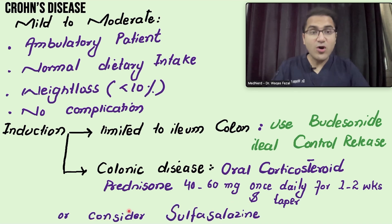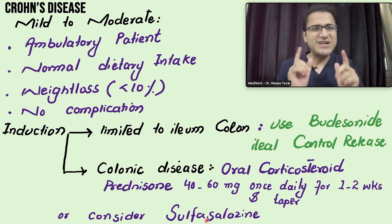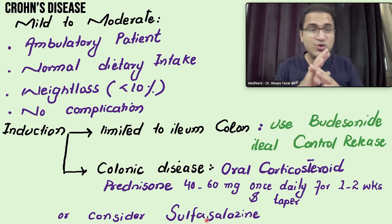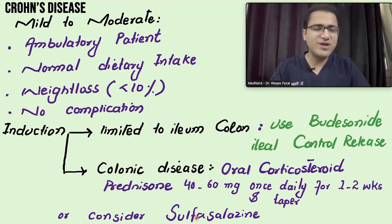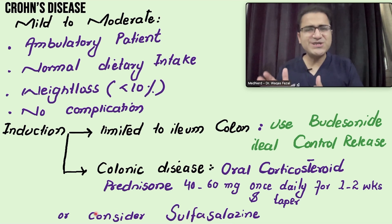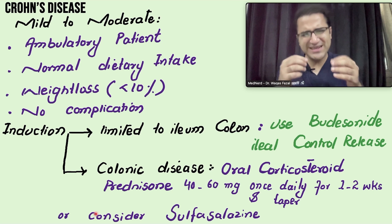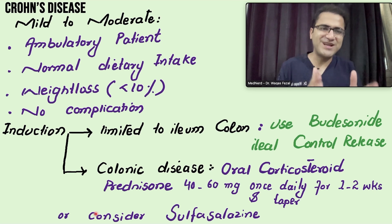You can also consider sulfasalazine, but remember sulfasalazine in Crohn's disease is controversial. We use sulfasalazine to treat ulcerative colitis, but in Crohn's disease it is not supported by strong evidence, so it is preferable to avoid sulfasalazine. However, as it is mentioned in many books, sulfasalazine can be used instead of corticosteroids in mild to moderate Crohn's disease.